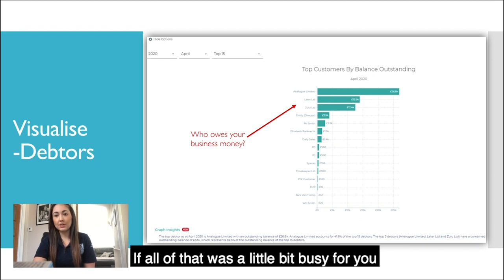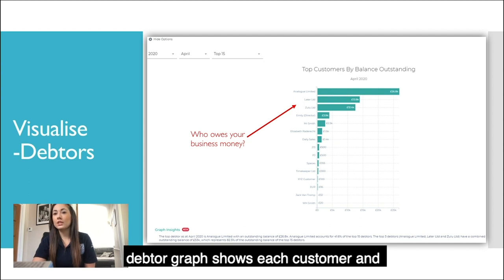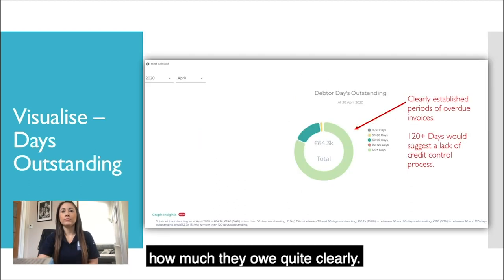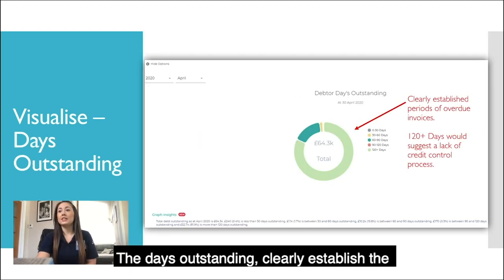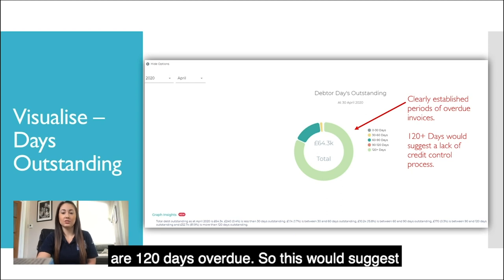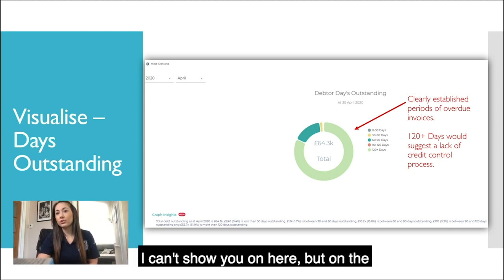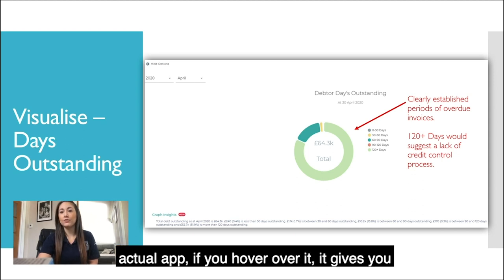If the accounts receivable view was a little busy, there are further breakdowns available. The debtor graph shows each customer and how much they owe quite clearly. The days outstanding clearly establishes periods of overdue invoices — as you can see, the majority of invoices are 120 days overdue, which would suggest a lack in the credit control process. On the actual app, if you hover over, it gives you the monetary amounts as well.